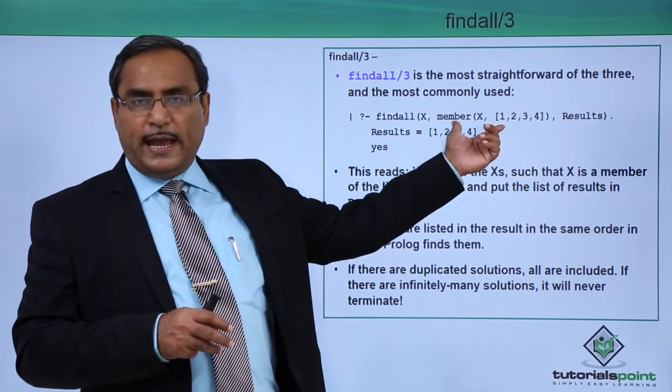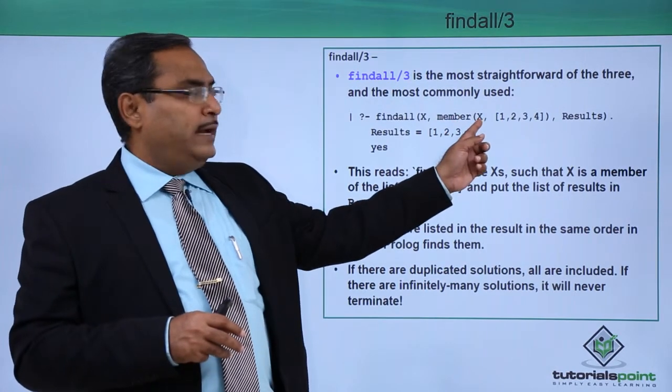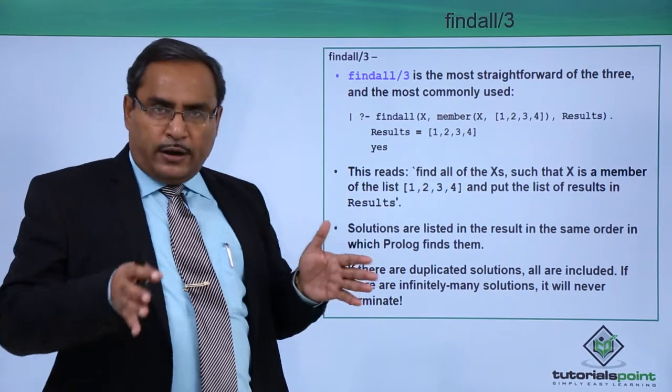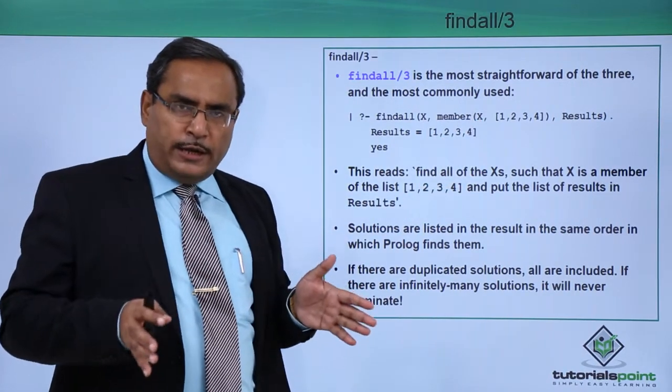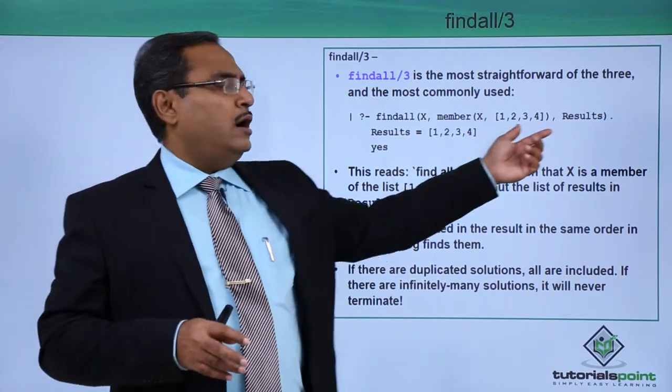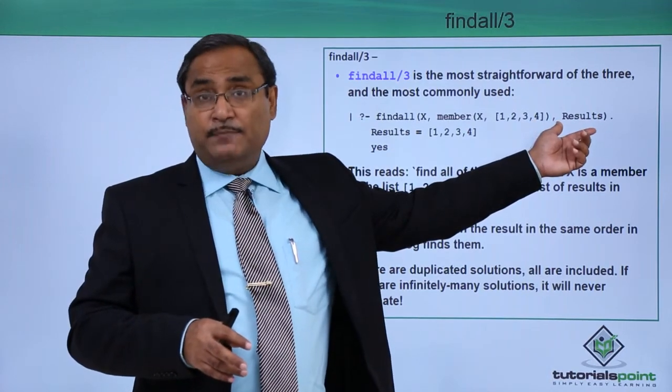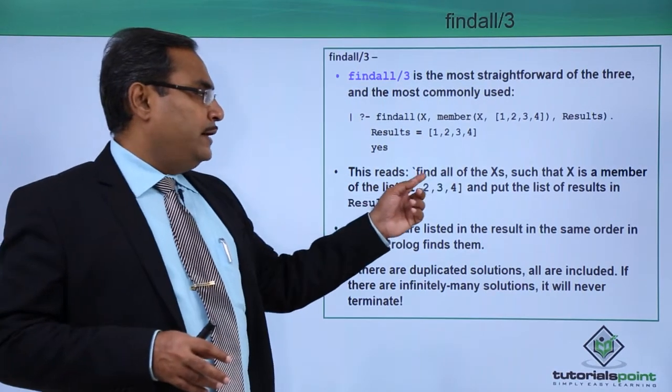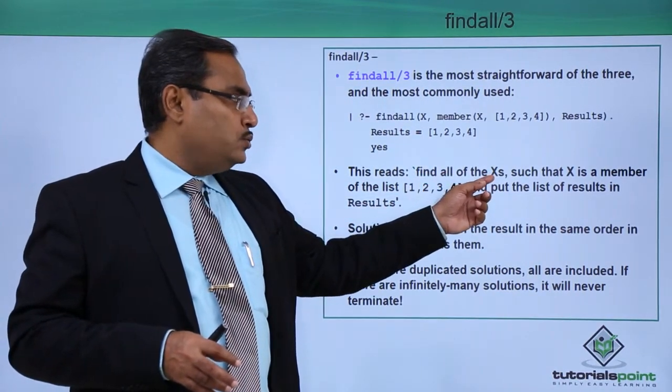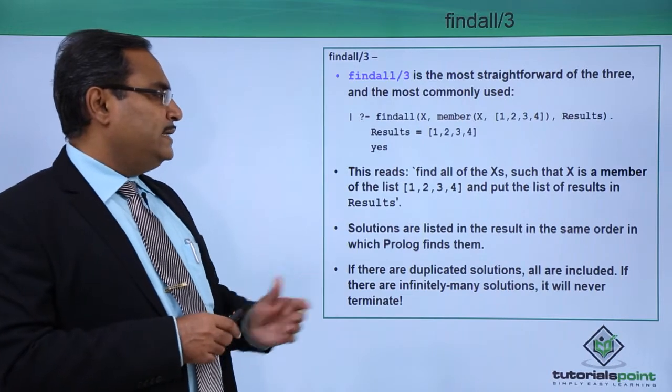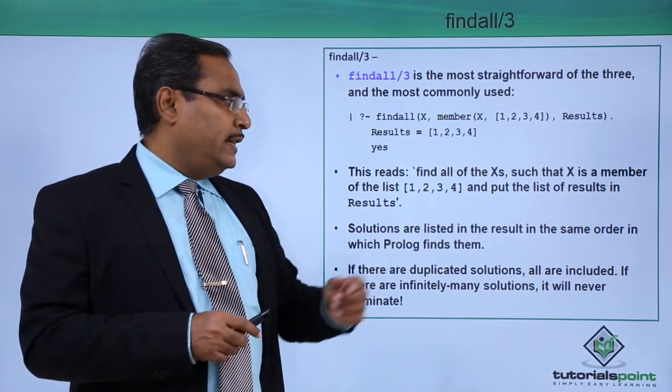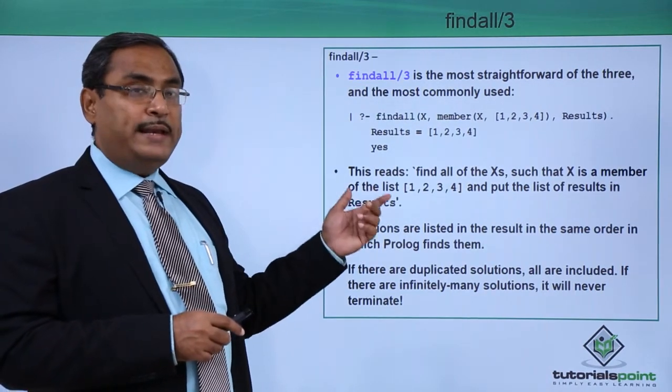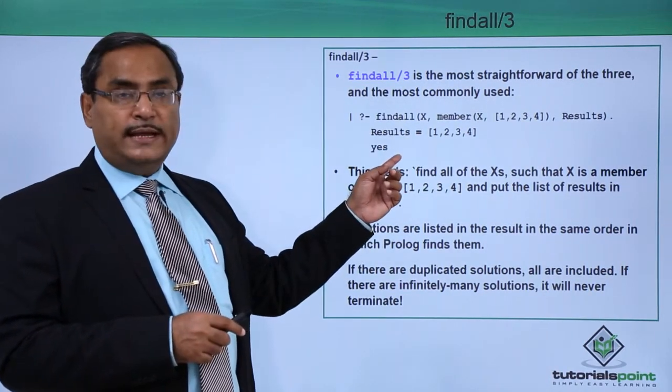When this respective query will be executed, then X will get instantiated at first with 1, then 2, then 3, then 4. Combining all of them, accumulating all of them, it will produce the output list Results and the output will be coming like this. This reads: find all of the X values such that X is a member of the list this, and put the list of results into the variable Results. That is the main explanation of this example.